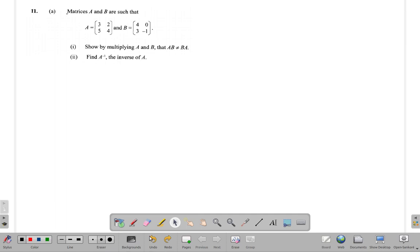So A is three, two, five, four. That is A. Now remember, A inverse will be the determinant of A, or one divided by the determinant of A, times...